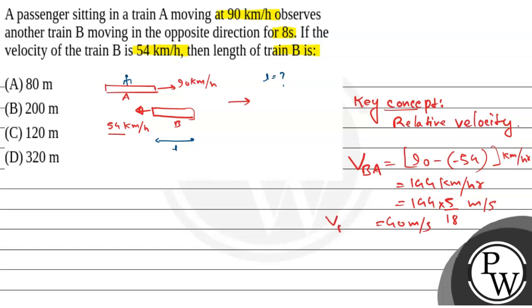So this is the relative velocity between them. We can say the person sitting on train A sees train B moving at 40 meters per second relative to them.